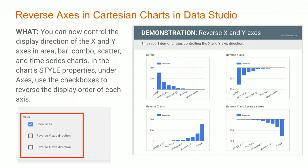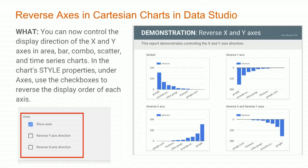So what's new in product this week? We have a few things for Data Studio. The first is reverse axes in Cartesian charts in Data Studio. You can now control the display direction of the X and Y axes in several different types of charts. You can find this in the Styles property under axes, then use the checkbox to be able to change the order of how they're going to display. On the right-hand side, you can see a quick demo of what this looks like when you do change the direction of these axes.